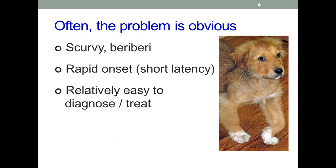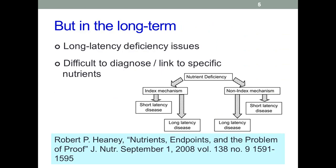In many cases, nutritional deficiencies will produce easily identifiable symptoms within a few months or even weeks. This sad-looking puppy clearly has rickets, a bone growth problem caused by a lack of vitamin D. This paper, quoted from a lecture by Robert Heaney, is one of a number that have appeared recently questioning the validity of clinical trials for understanding nutrition, especially in populations.